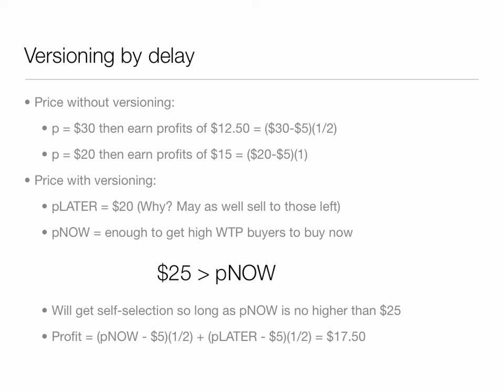The profit: you'll get $25 minus $5 from the high types, that is a margin of $20, and a margin of $15 from the low types. So if you don't discount the future as a seller the same way the buyers do, your total profits are going to be $17.50 — you sell to everybody on average for a margin of $17.50, as opposed to half the customers before for a much higher margin of $25. So you're much better off.